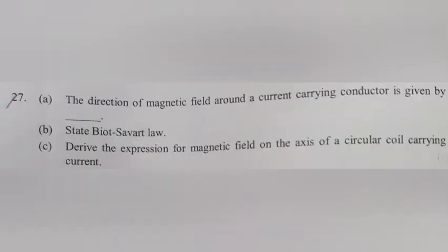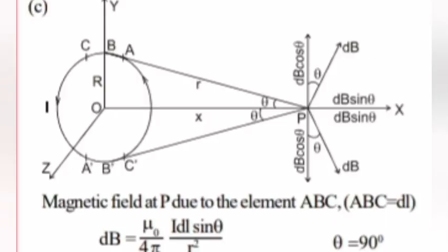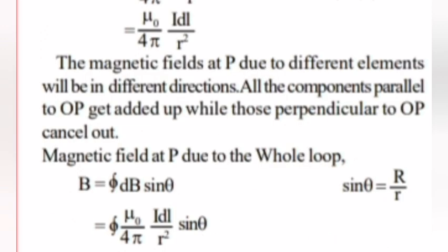Question 27C: Derive the expression for magnetic field on the axis of a circular coil carrying conductor. Answer: Magnetic field at P due to the element ABC equals dL. dB equals μ₀ by 4π idL sin θ by R². Theta equals 90 degrees equals μ₀ by 4π idL by R². The magnetic field at P due to different elements will be in different directions. All the components parallel to OP get added up while those perpendicular to OP cancel out.